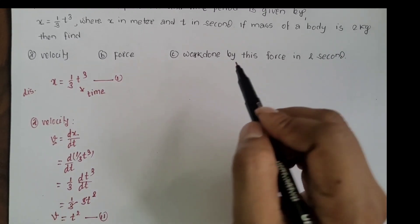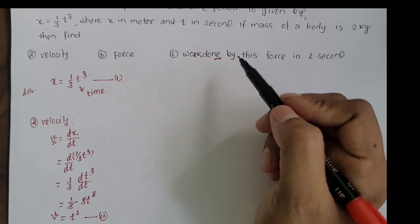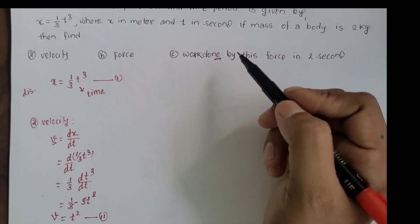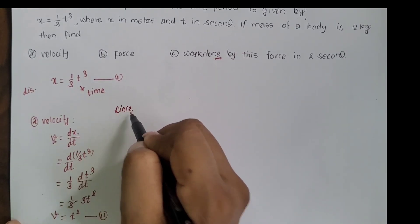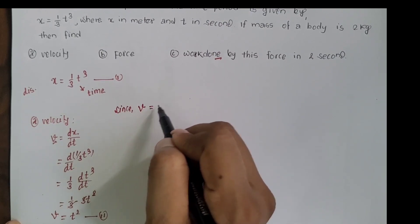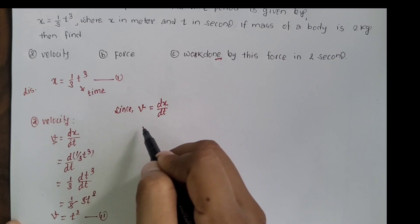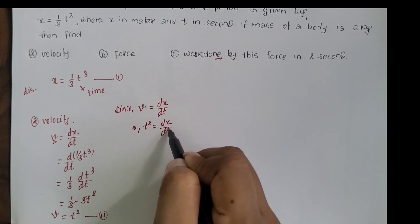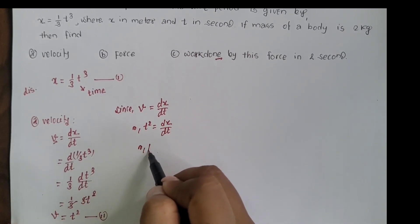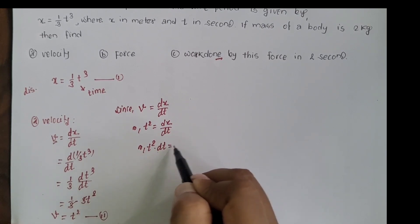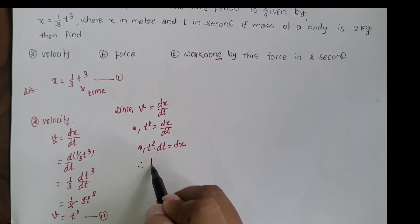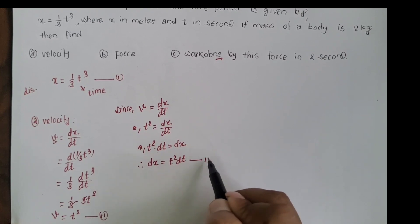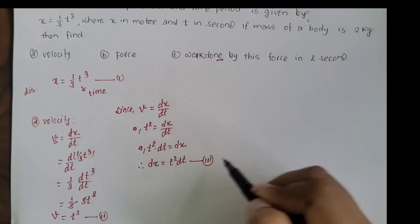To calculate work done later, we need the small displacement dx. Since v = dx/dt = t², we can write dx = t² dt. This expression for small displacement will be substituted when calculating work done.